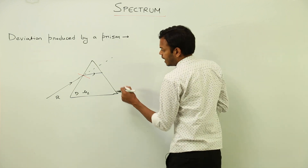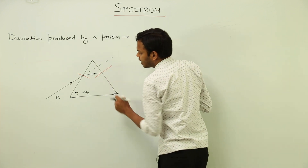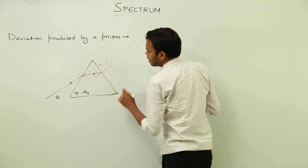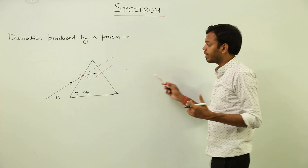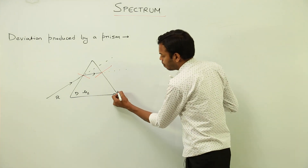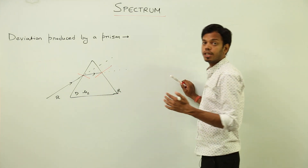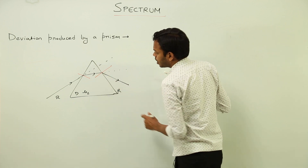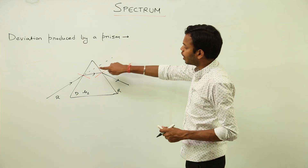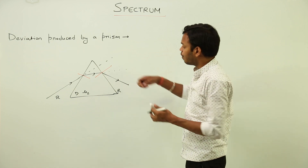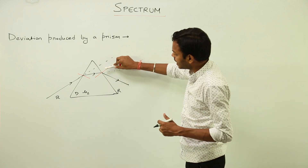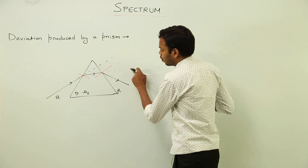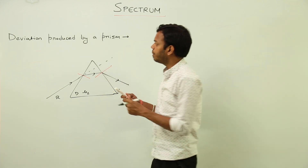On the other surface, there is going to be another refraction, and to analyze it we draw another normal. This time, the ray should have gone straight, but instead the ray is traveling from denser back to rarer medium, due to which it is going to bend away from the normal. I am drawing the original path so that you can see what is towards and what is away from the normal.